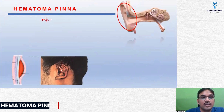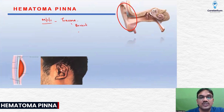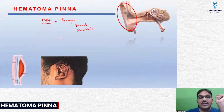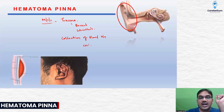Hematoma of the pinna — the most common cause is trauma. In the case of boxers and wrestlers, there is external trauma to the pinna. In these conditions, there will be collection of blood in between the cartilage and its covering, the perichondrium.